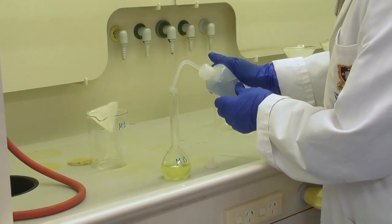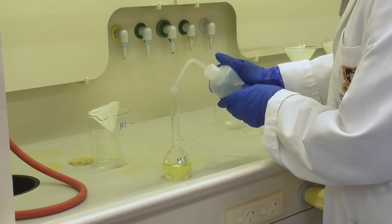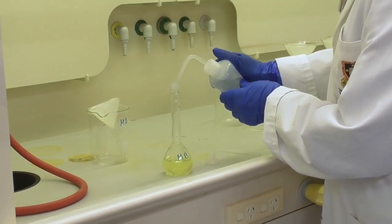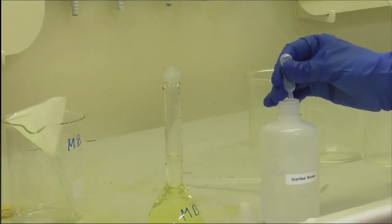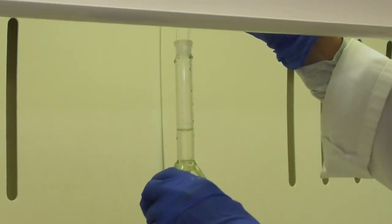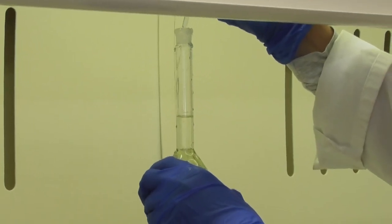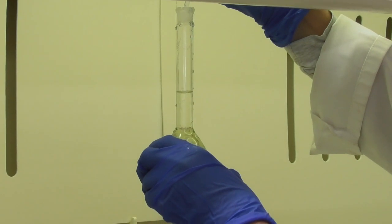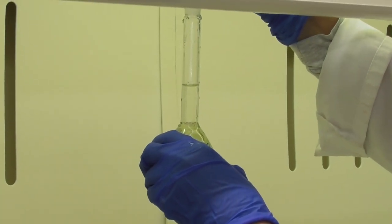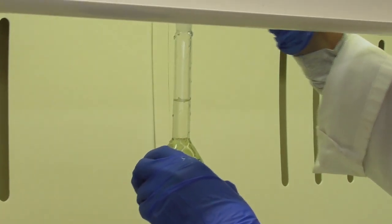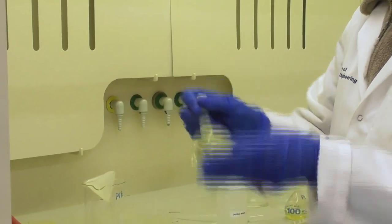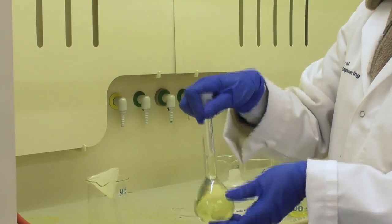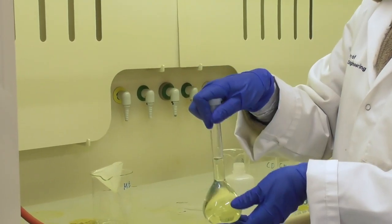I stop and add the last little bit of volume with a dropper to make sure I get the exact volume with the meniscus sitting on the line. I put a stopper on and invert the flask a number of times to make sure the contents are mixed well.